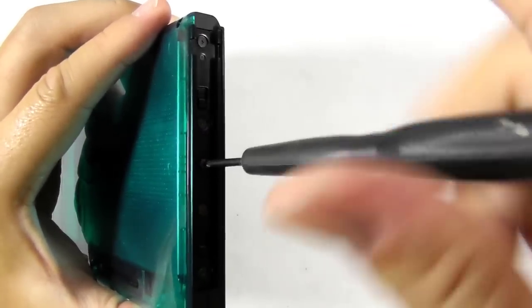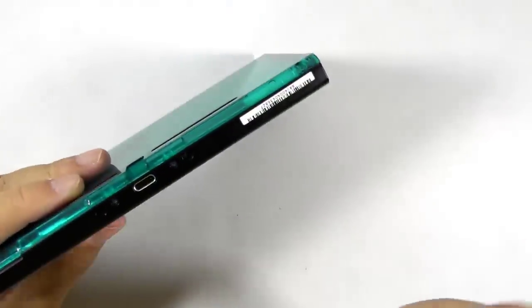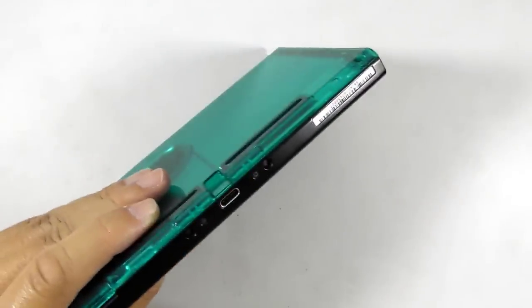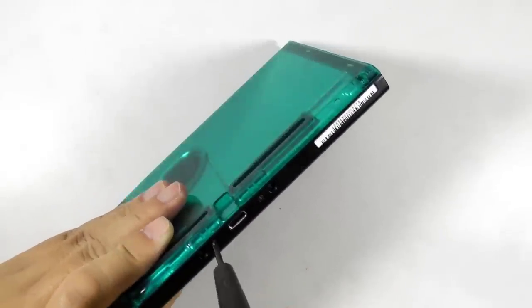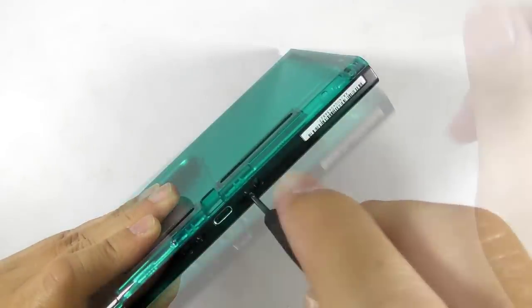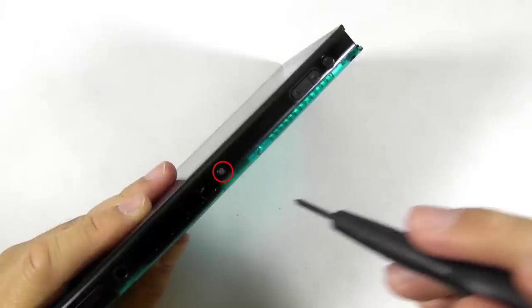And do the same thing on the left Joy-Con rail. Remove the middle screw for now. Then remove these screws at the side of the USB port. Flip the console and remove the screw.